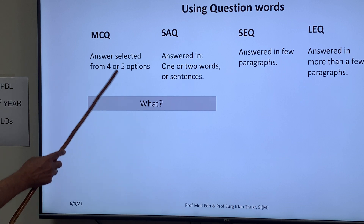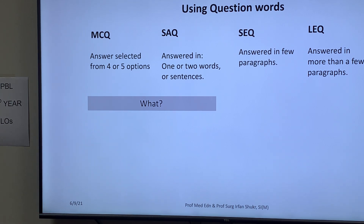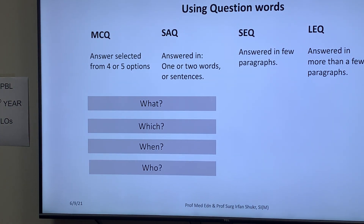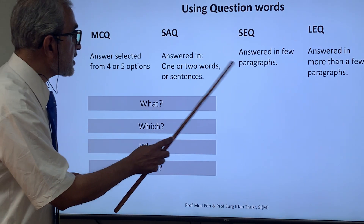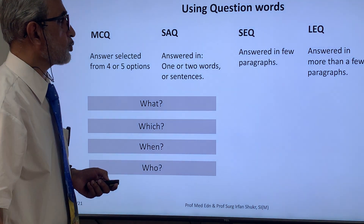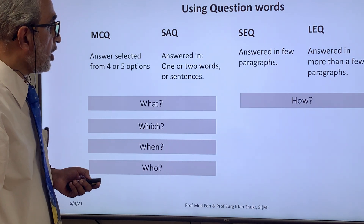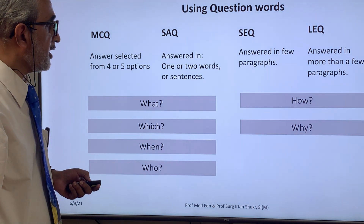When writing multiple choice questions and short answer questions, the question words most commonly used are 'what,' 'which,' and 'who.' In short essay and long essay questions, the question words most commonly used are 'how' and 'why.'